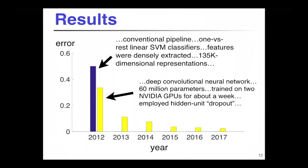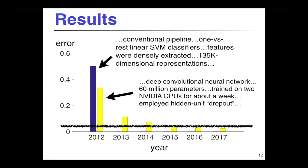Every year after, essentially all of the submissions were CNNs, partly because you can share the code very easily. Performance continued to increase quite a bit. Human performance is somewhere around five percent — this is hard to measure; you need to get a grad student to actually learn these classes themselves because you can't do it as a layman. This problem I would say is essentially solved — you're definitely on par with human performance.